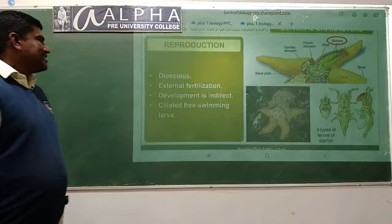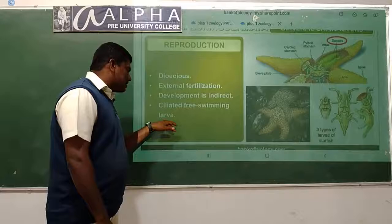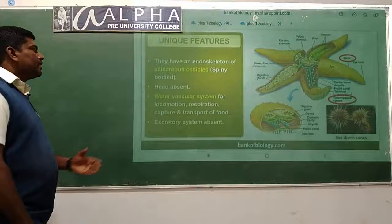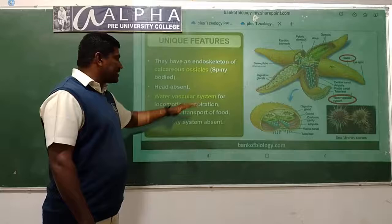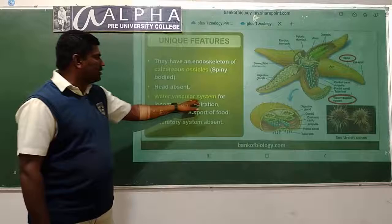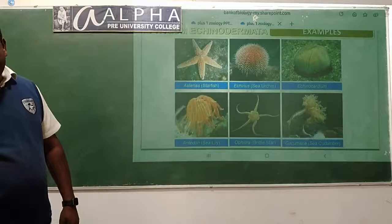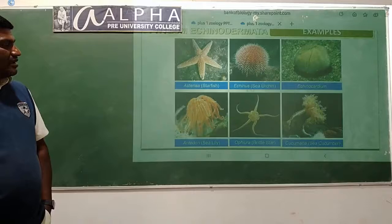Respiratory system: skin gills help in respiration. Water vascular system is present in Echinoderms. Circulatory system is open type. Reproduction: sexes are separate, external fertilization, development is indirect with ciliated free-swimming larvae. Unique features: endoskeleton of calcareous ossicles - spiny body. Head is absent. Water vascular system is present for locomotion, respiration, and food capture and transportation. Excretory system is completely absent.